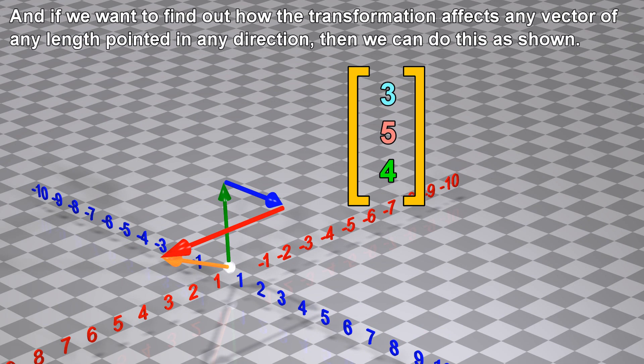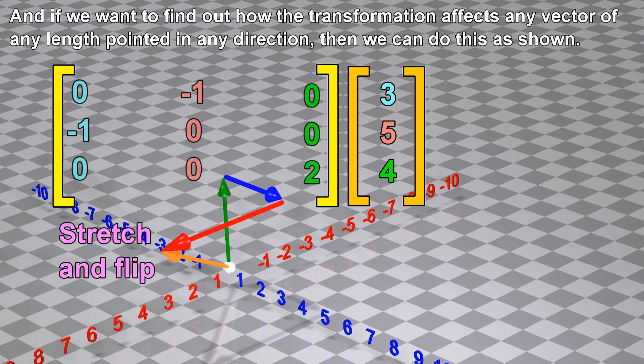And if we want to find out how the transformation affects any vector of any length pointed in any direction, then we can do this as shown.